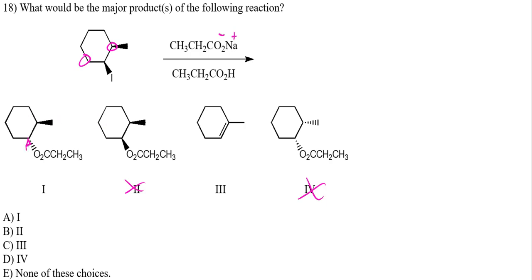To differentiate between SN2 (product 3) and E2 (product 1): look at the beta hydrogens. The SN2 product path has four beta hydrogens, while the E2 product path has six. Fewer hydrogens in the elimination product is typically more preferred — this corresponds to Zaitsev's rule (more substituted alkene is favored). So the product with fewer hydrogens is answer choice A (product 1).